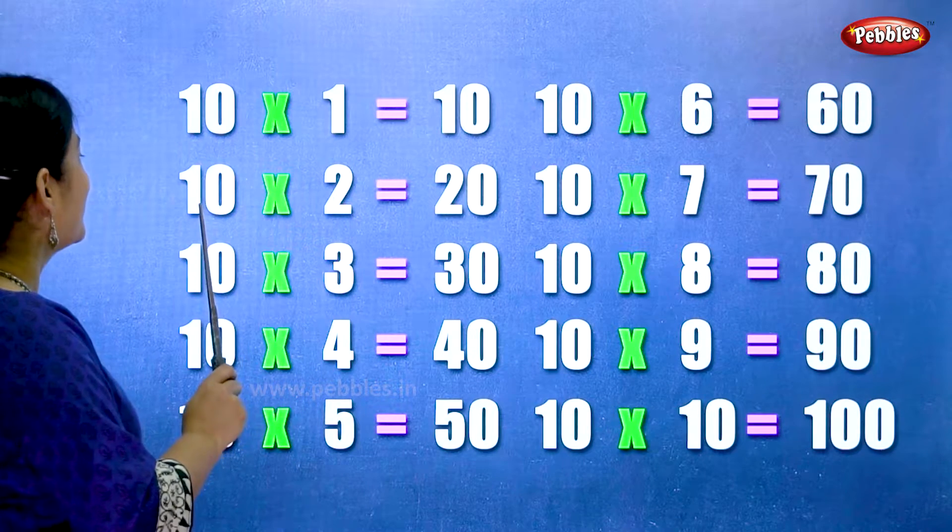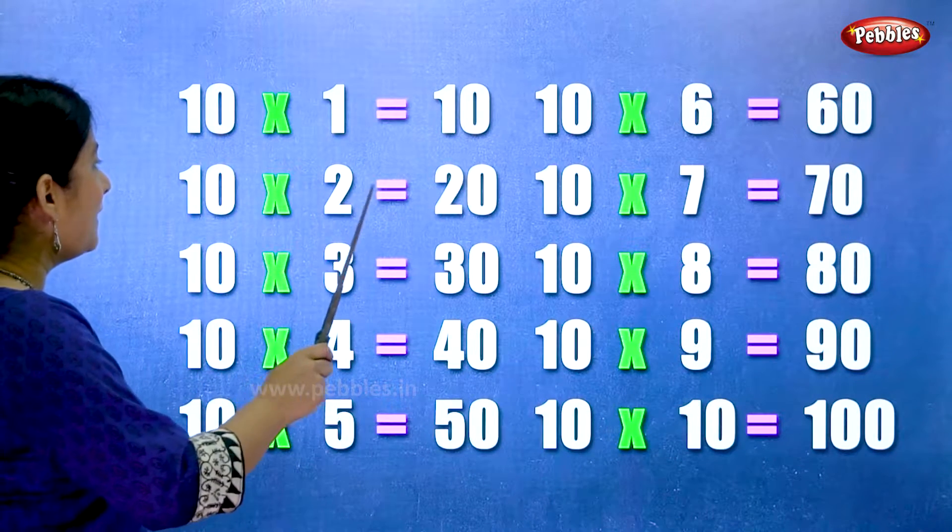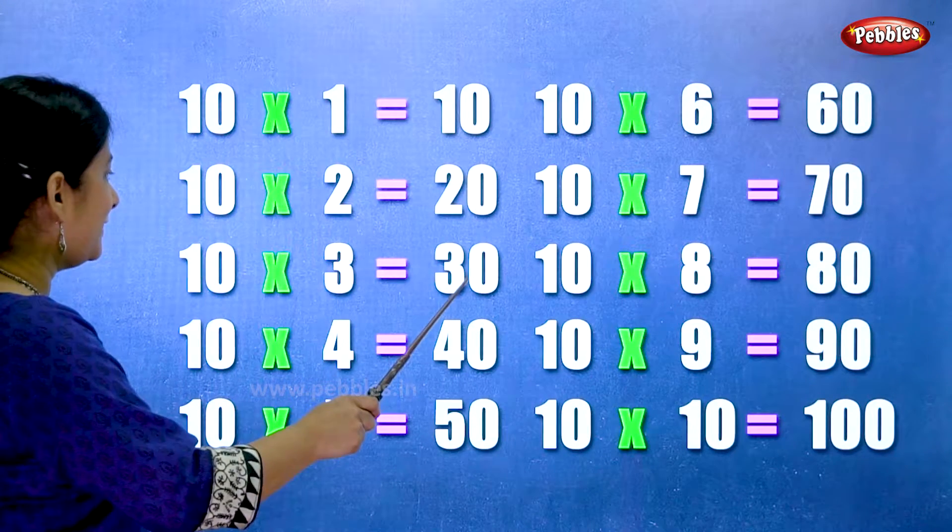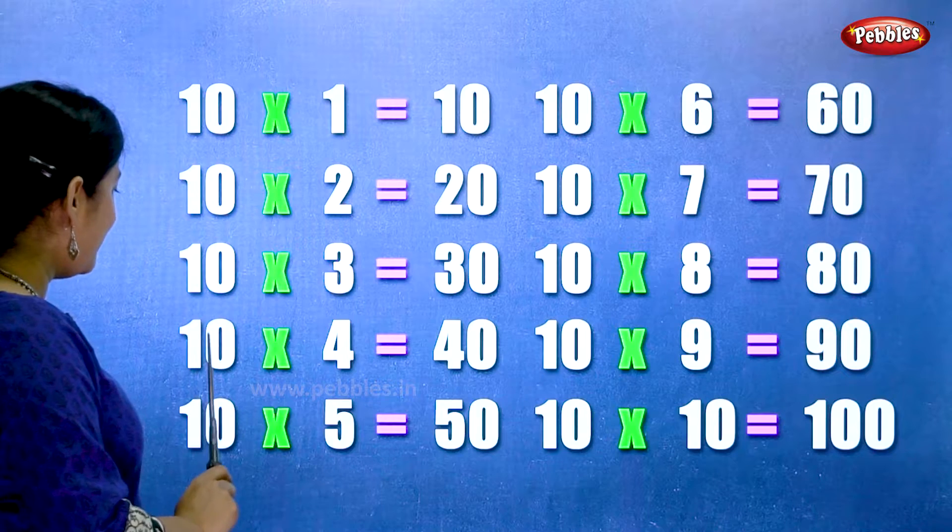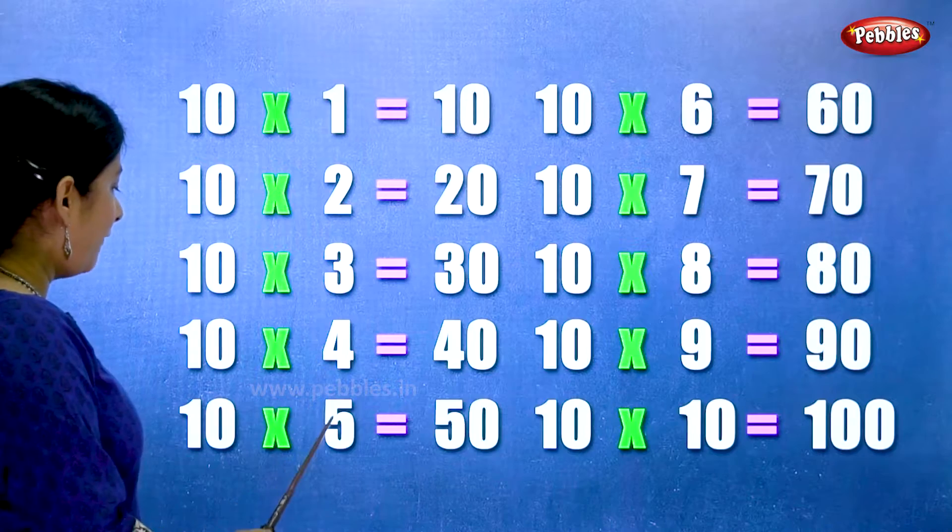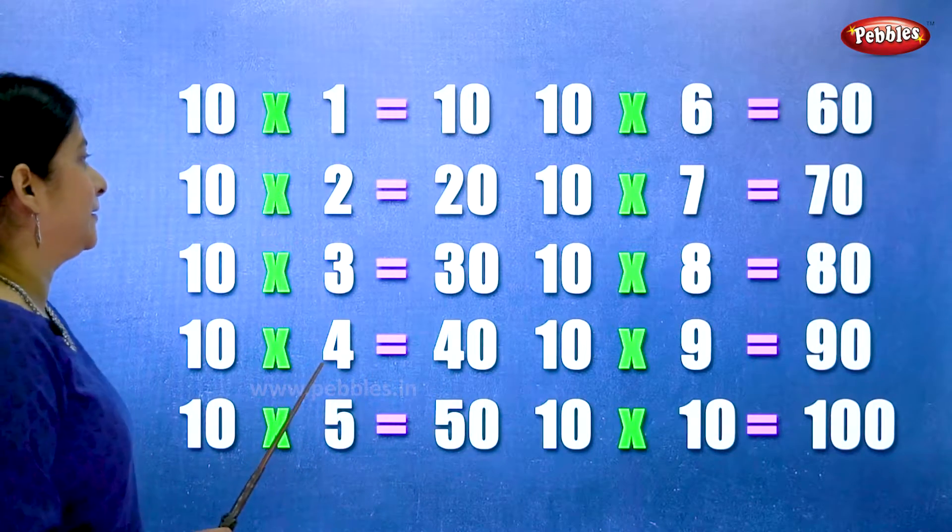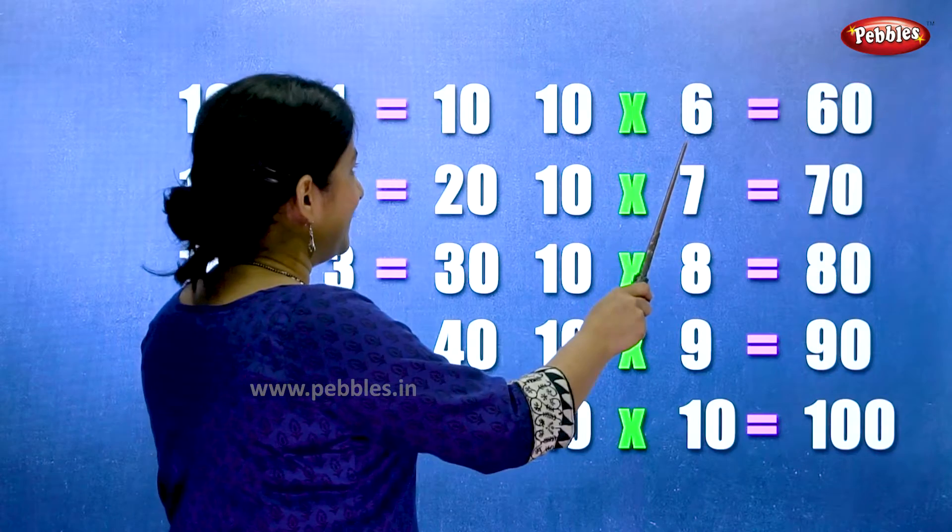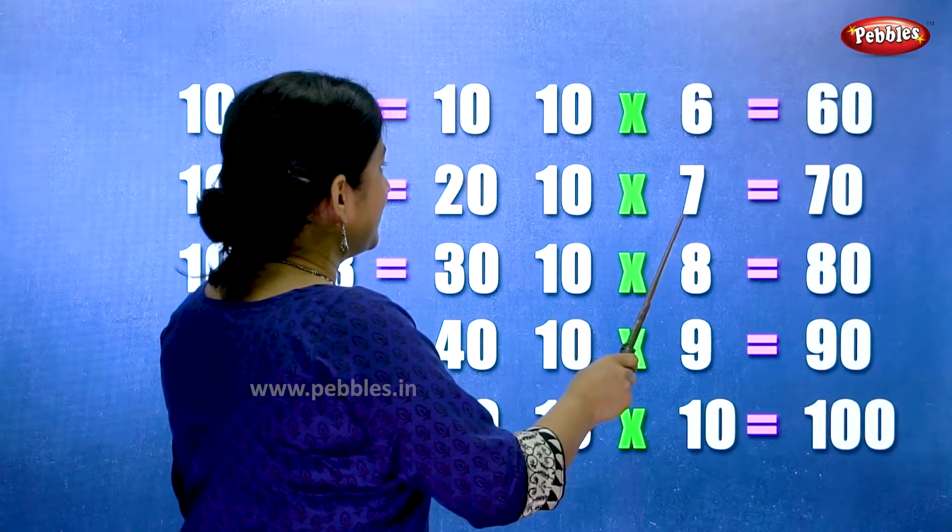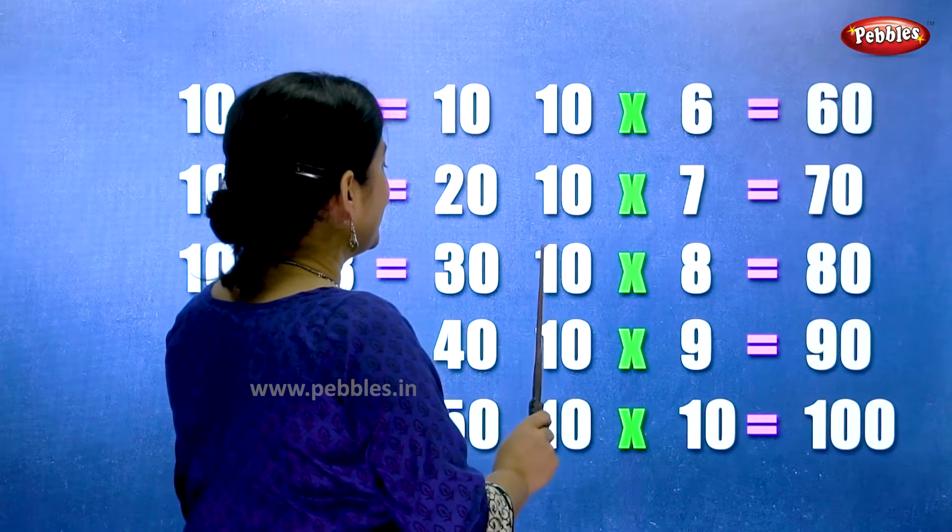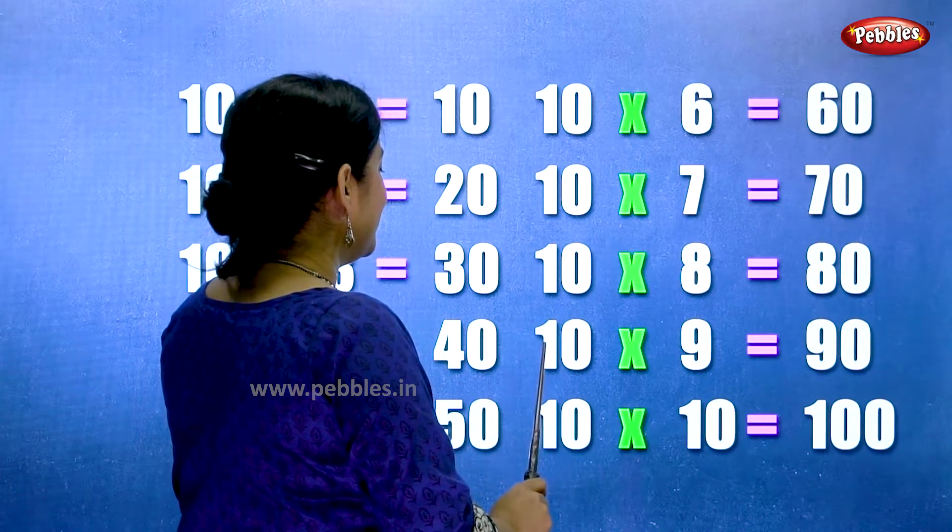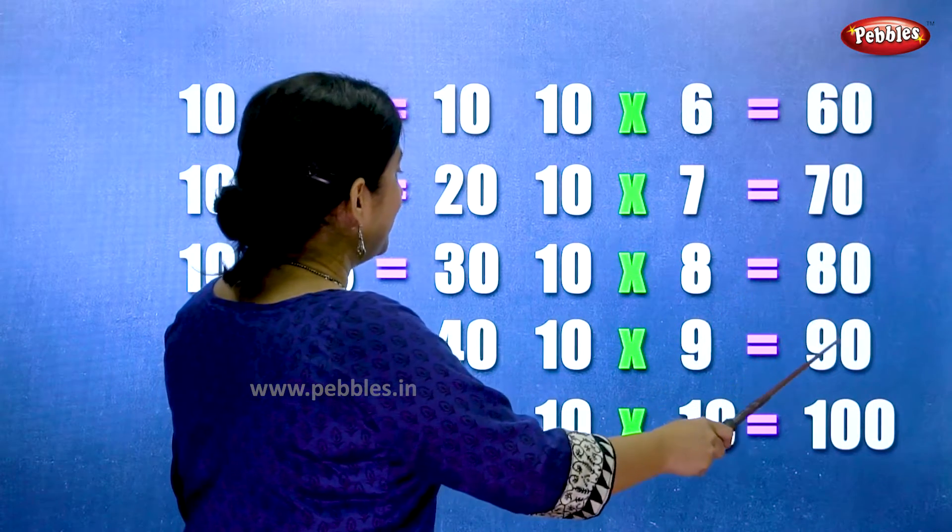Ten twos are twenty. Ten threes are thirty. Ten fours are forty. Ten fives are fifty. Ten sixes are sixty. Ten sevens are seventy. Ten eights are eighty. Ten nines are ninety.